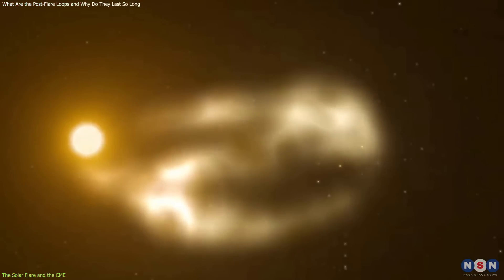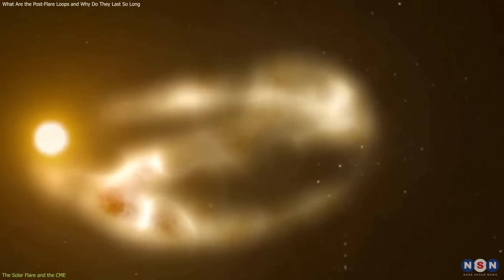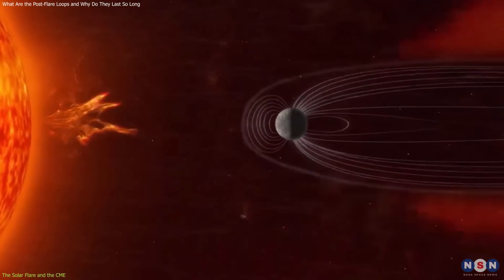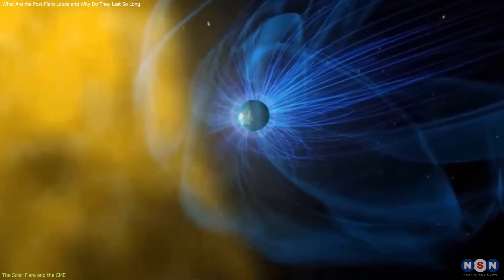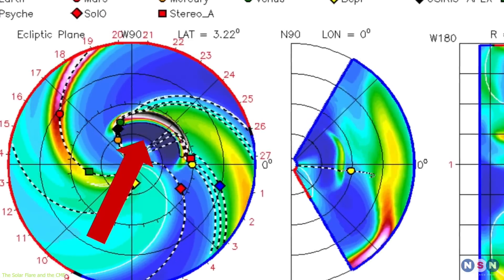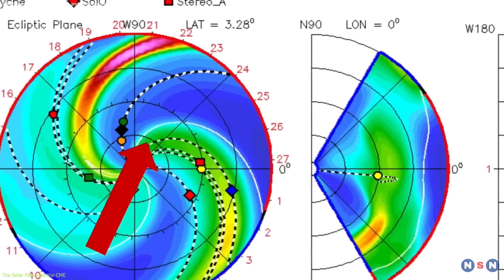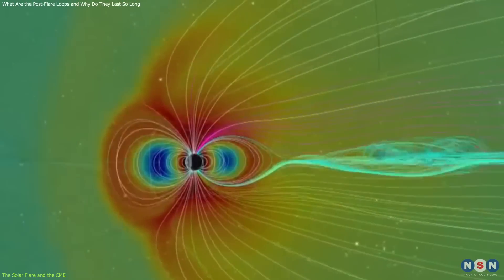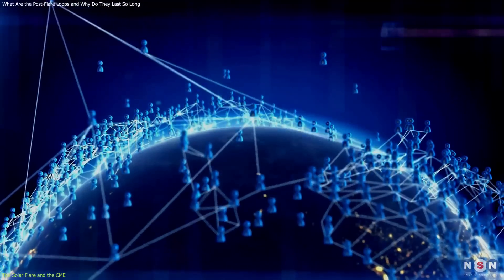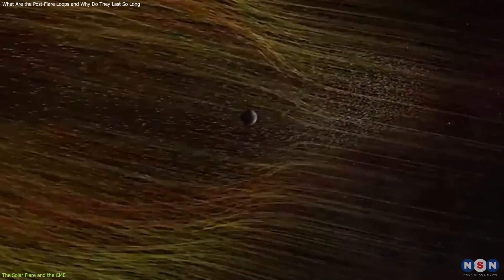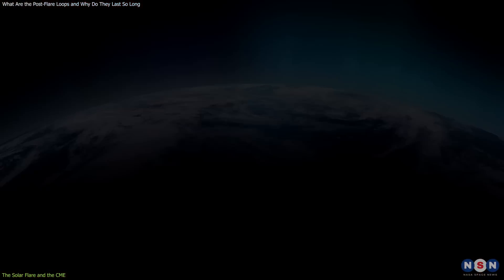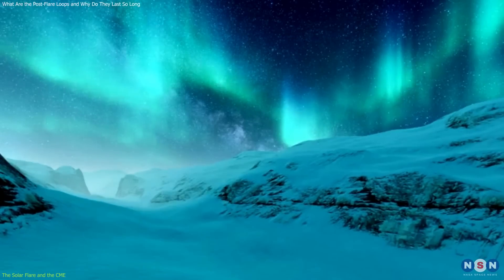The solar flare also triggered a coronal mass ejection, or CME, which is a huge cloud of plasma and magnetic field that is ejected from the sun at high speed. The CME was estimated to be about 10 times the size of Earth and traveled at about 2,000 kilometers per second. The CME was directed away from Earth, but it still had some effects on our planet. It disturbed the Earth's magnetic field, causing geomagnetic storms that can interfere with satellites, power grids, and communication systems. It also enhanced the solar wind, which interacted with the Earth's atmosphere, creating beautiful auroras that were visible in many parts of the world.